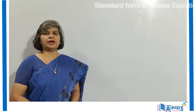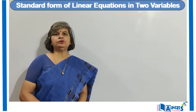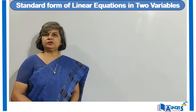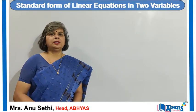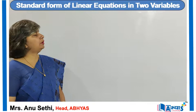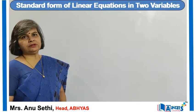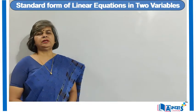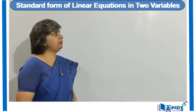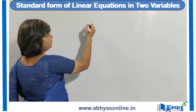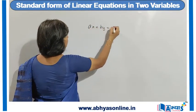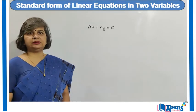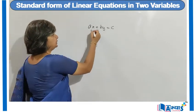Let us discuss the concept of standard form of a linear equation in 2 variables. We know that a linear equation is an equation in which all the terms are of degree 1 and the highest degree is 1. It should have an equal to sign, and if it is a linear equation in 2 variables, it should have 2 unknowns. So if we have an equation as Ax plus By is equal to C, this is an equation in 2 variables as it has 2 unknowns, that is x and y.